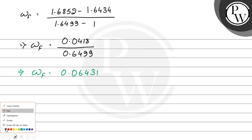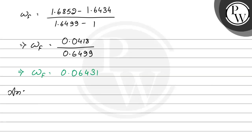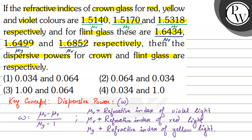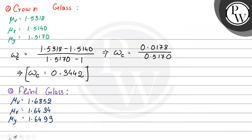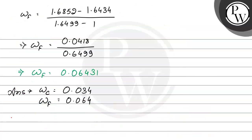So in conclusion, the dispersive power for crown glass is approximately 0.034 and the dispersive power for flint glass is approximately 0.064. Checking the options, this matches option number 1: 0.034 and 0.064. So the correct option is option 1. I hope you have understood the solution well. Thank you and best of luck.